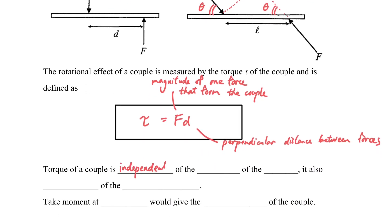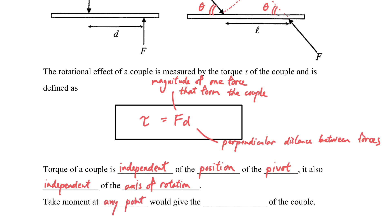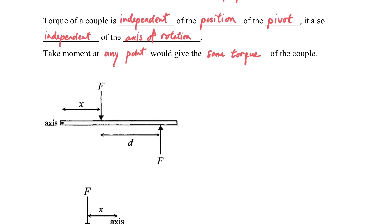The torque of a couple is independent of the position of the pivot. That means no matter what the axis of rotation is, and no matter where it is defined, finding the torque remains the same. No matter how we define the axis of rotation, we will get the same result.